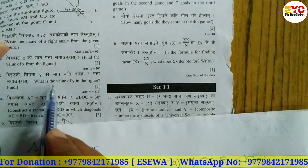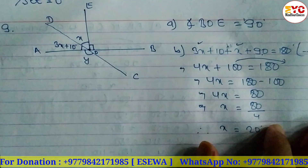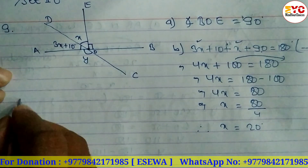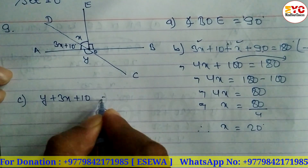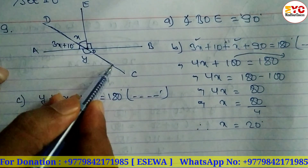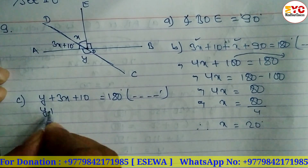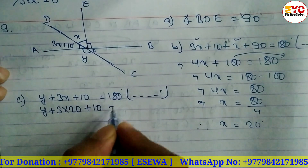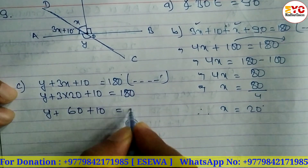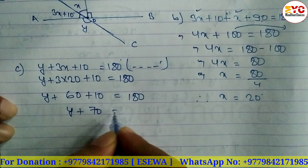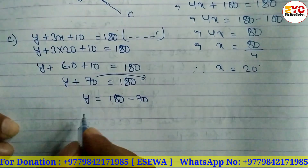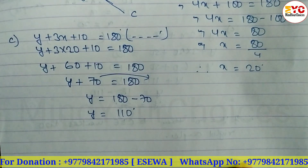Question number C: what is the value of Y in the figure? Y plus this angle equals 180, reason being a straight angle. So Y plus 3x plus 10 equals 180 degrees. Substituting the value of X as 20: Y plus 3 times 20 plus 10 equals 180. That is Y plus 60 plus 10 equals 180, so Y plus 70 equals 180. Therefore Y equals 180 minus 70, which gives Y equals 110.